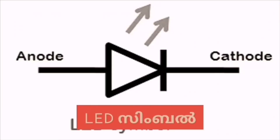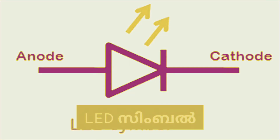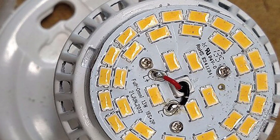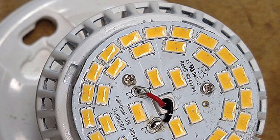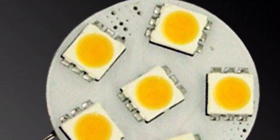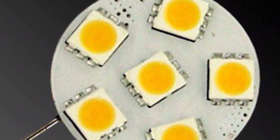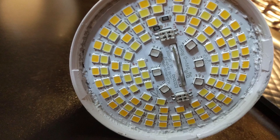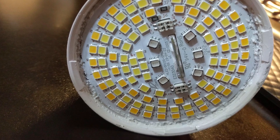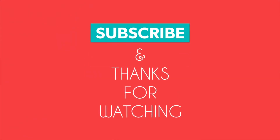Let's look at the LED symbol. The LED symbol represents a diode with light emission. We are working on LED bulbs — this LED bulb is not only one bulb, multiple LEDs are used together. If you like this video, please like, dislike, and subscribe.